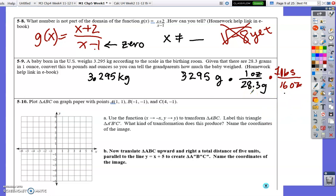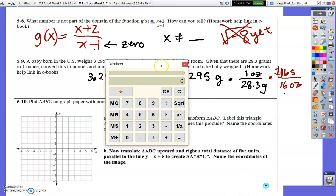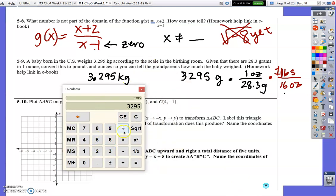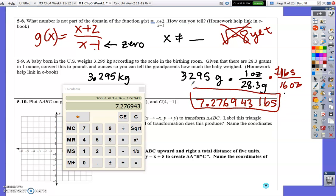And so, using a calculator, 3,295 divided by 28.3 equals that number also divided by 16. So, 3,295 divided by 28.3 divided by 16. So, 7.27969243 pounds. This is our answer.